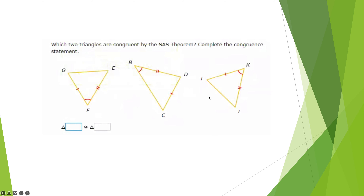Which two of these triangles can you conclude are congruent by the Side-Angle-Side theorem? Remember, with Side-Angle-Side you have to have the angle between the two sides. In the first one, the angle is between the two sides. In the third one, the angle is between the two sides. In the middle one, the angle is not between the two sides, so it's not Side-Angle-Side.